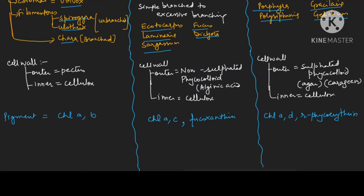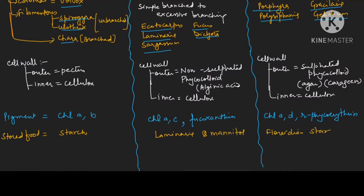Next we will focus on stored food. In green algae, the stored food is starch. In brown algae, it is laminarin and mannitol. In red algae, it is floridean starch.